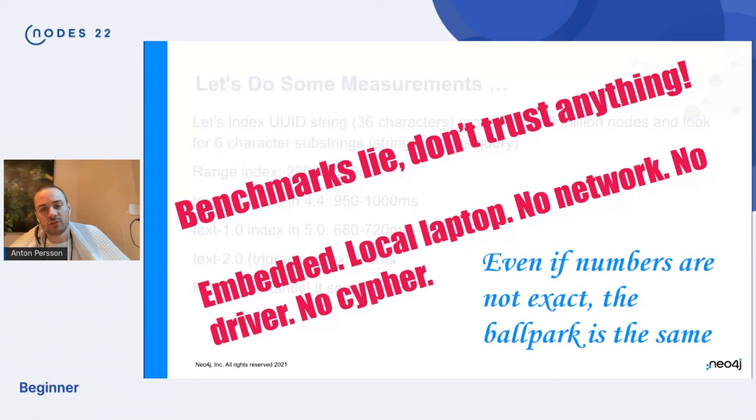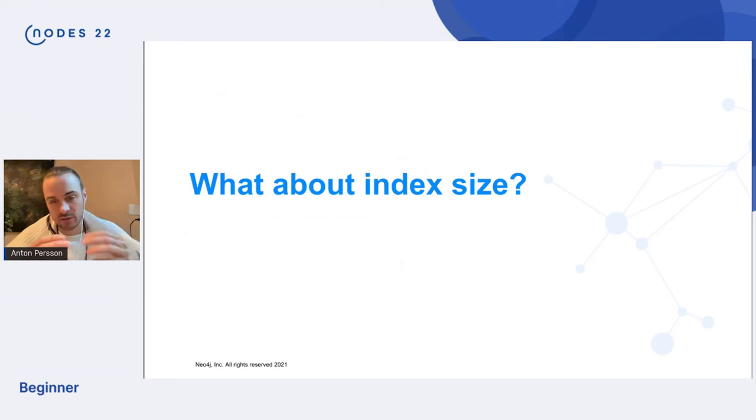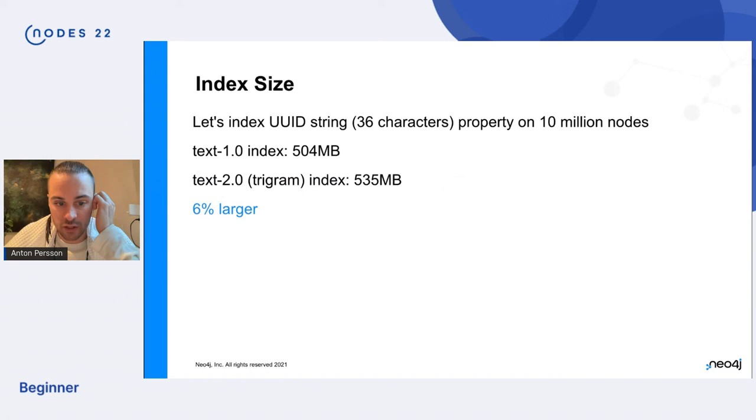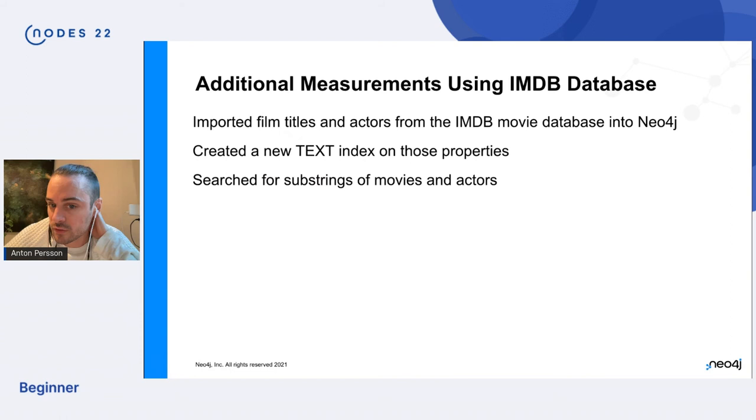Okay. But this is a benchmark. It was run on embedded on our local laptop. There's no network, no driver, no Cypher, but the numbers point to some ballpark expectations of the performance, right? But we all know that benchmarks lie. So what about the index size? It seems crazy to just split the string up into all of its components and then index that should be like three times larger than the index, but that's not necessarily the case. In this case, it's only 6% larger with the UUID example.